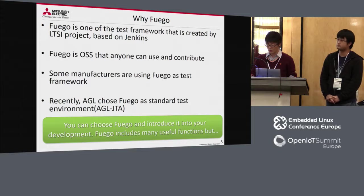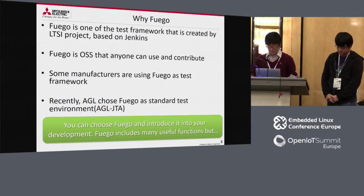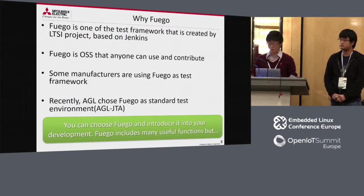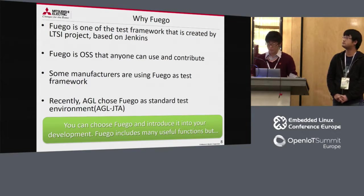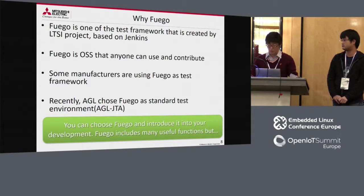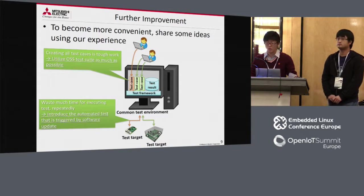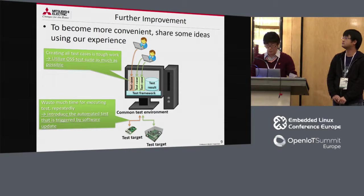Additionally, Automotive Grade Linux (AGL) chose Fuego as a standard test environment. They named it AGL JTA and customized it as open source for the AGL project. Fuego is a stable environment and the method of how to use it is starting to be shared in the OSS community. That's why we chose Fuego as our test framework. Because Fuego includes many useful functions, it should help your development. But when we use Fuego for actual development, there are ways to make it more convenient.